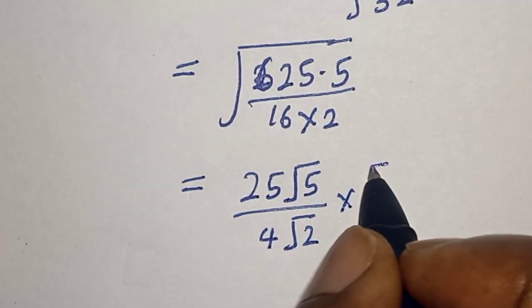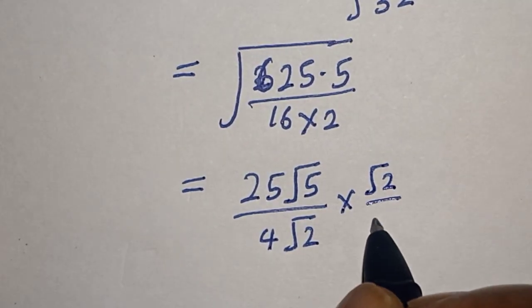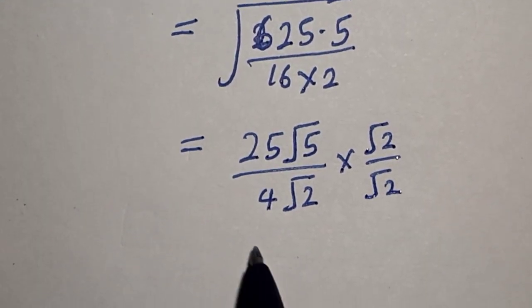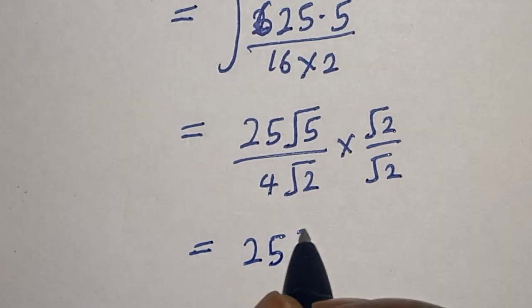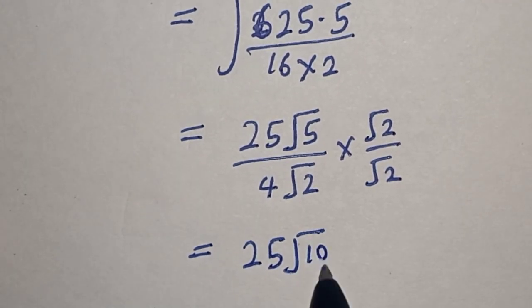Then this equals 25√10 over the square root of 4 times √2 times √2.